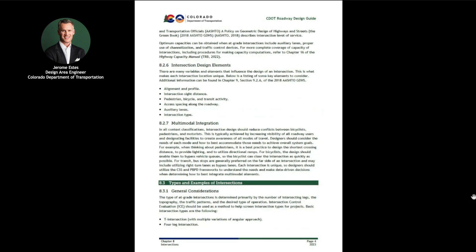This chapter discusses many design considerations for intersections including human factors, capacity, design elements, and multimodal integration. Designers and engineers identify the type of intersection needed to appropriately lay out alignment and profile features, sight distance, intersection curves with safe and effective turning lane movements, channelization, and island designation. These movements may be managed by roundabouts, traffic signals, signing, and channelization depending on the type of intersection.